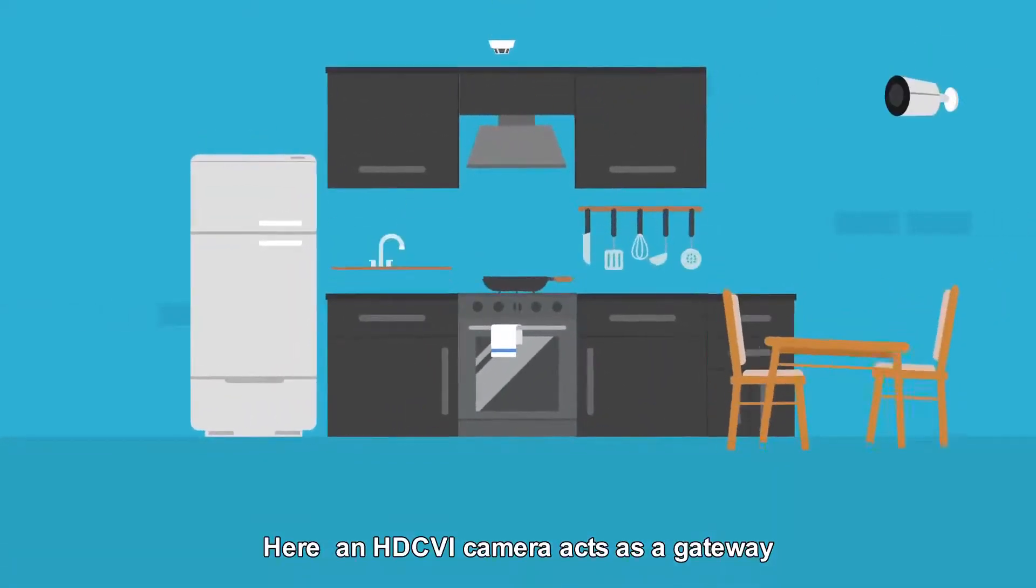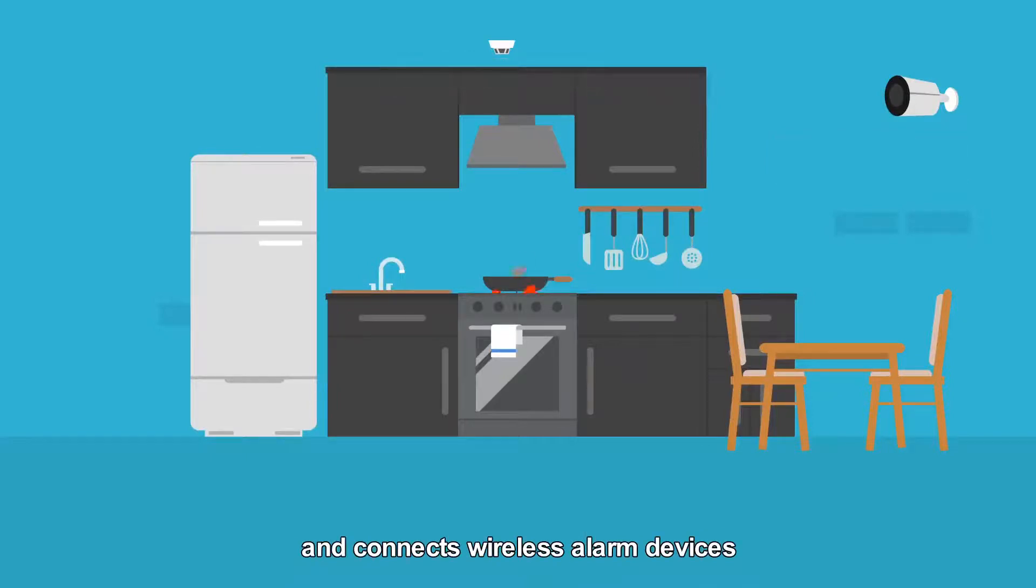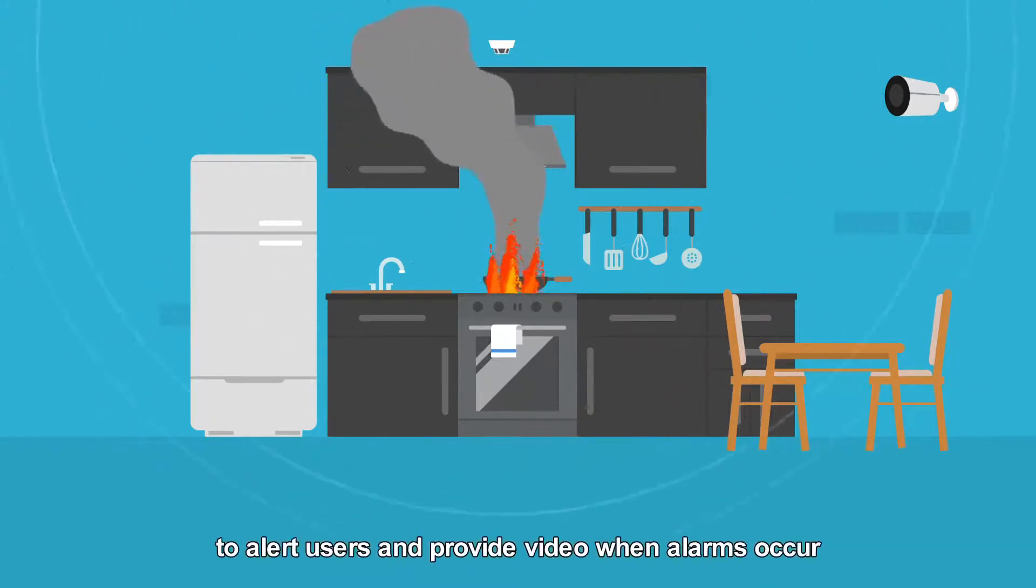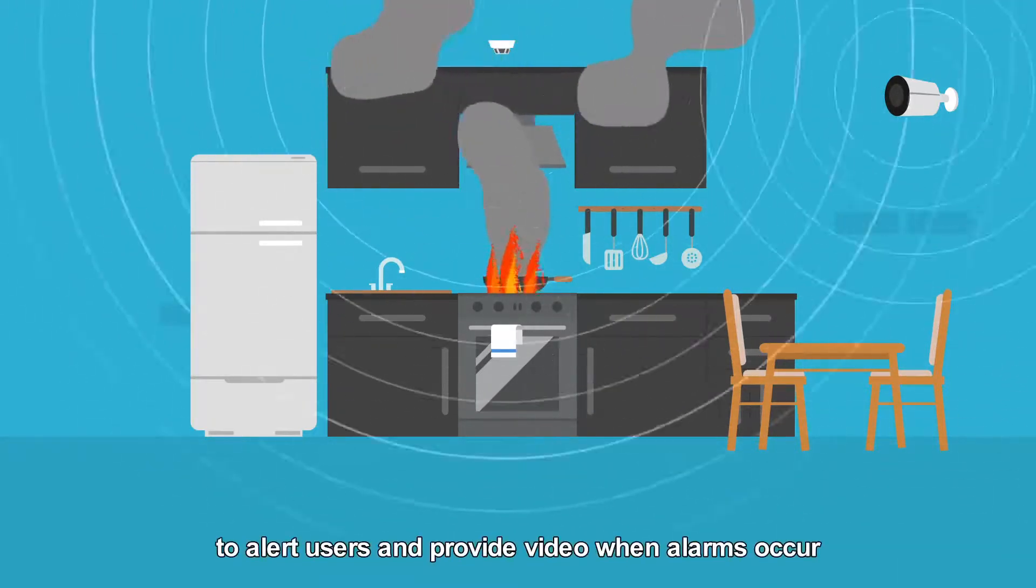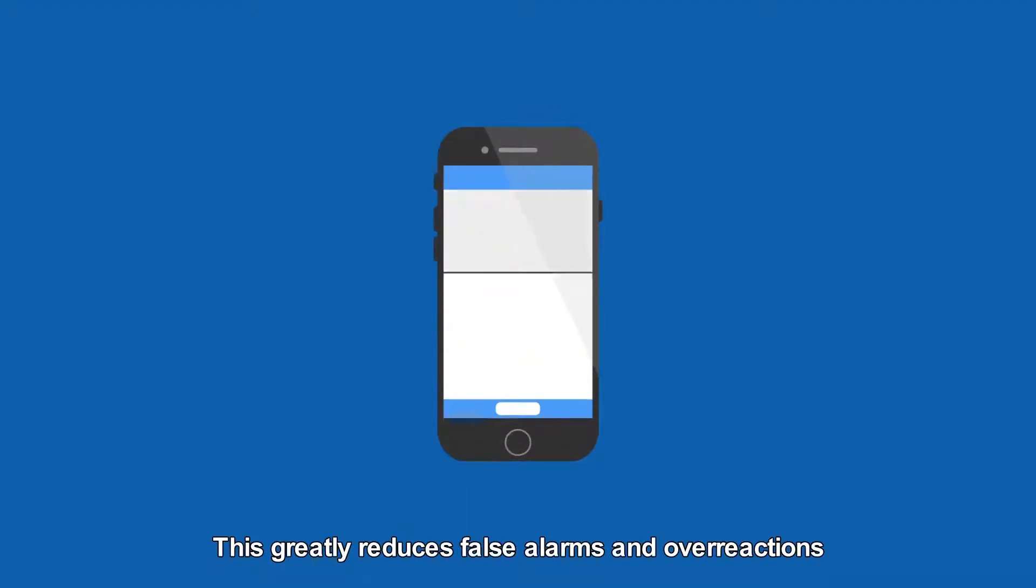Here, an HDCVI camera acts as a gateway and connects wireless alarm devices, such as a smoke detector or water leak detector, to alert users and provide video when alarms occur. This greatly reduces false alarms and overreactions.